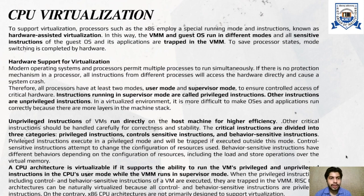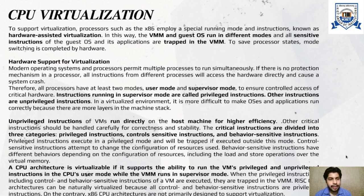Regarding hardware support for virtualization: modern operating systems and processors permit multiple processors to run simultaneously. If there is no protection mechanism in the processor, all instructions from different processors will access the hardware directly and cause a system crash. Therefore, all processors have at least two modes — user mode and supervisor mode — to ensure controlled access. Critical hardware instructions running in supervisor mode are called privileged instructions, and all others are unprivileged instructions.